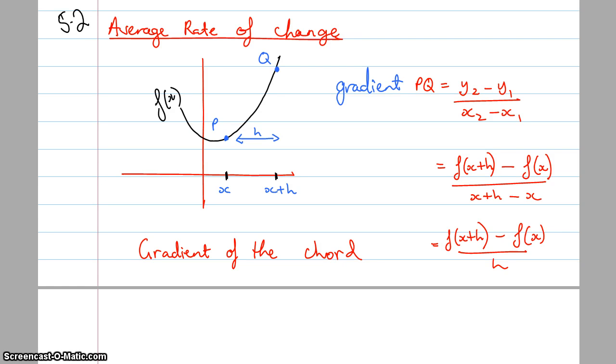Hi and welcome to the third video on calculus, chapter 5. In this video we're going to be looking at 5.2, which is average rate of change and instantaneous rate of change.